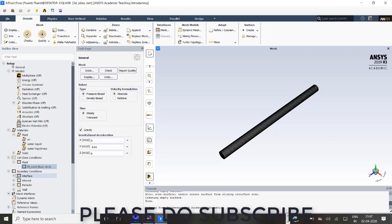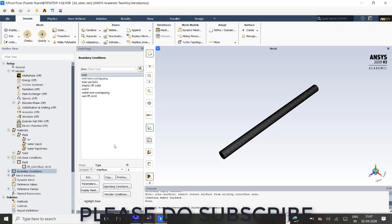In the boundary conditions I have created interface for inlet and outlet. Go to inlet, and in the type you can just in the list you can find out it would be velocity inlet. I have changed that into interface. Similarly, you can click on that and you can change the type into interface.